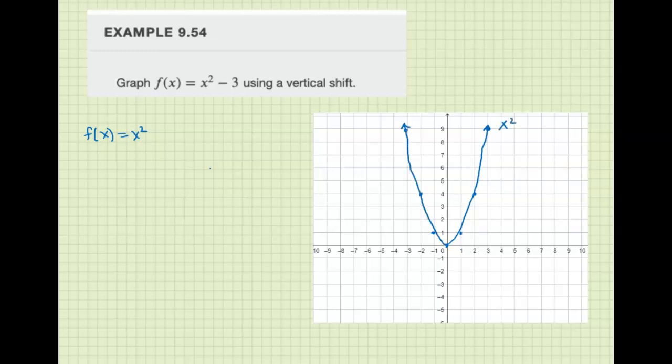Let's make a table of values and figure out values for x² - 3. So 0² - 3 is 0 - 3, which is -3.